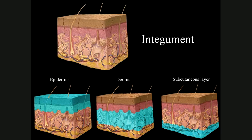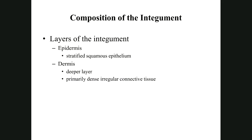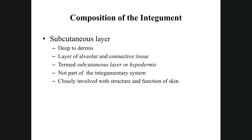Here we can see the epidermis and the dermis. The subcutaneous is many times not considered to be part of the integument, but we'll discuss it here because it's closely related. The epidermis is really just layers of cells — stratified squamous epithelium — providing outer protection and waterproofing. The dermis is the deeper layer, mainly dense irregular and sometimes loose connective tissue. Deep to the dermis is the subcutaneous layer, which I prefer to call the hypodermis — epi is above the dermis, hypo is below.